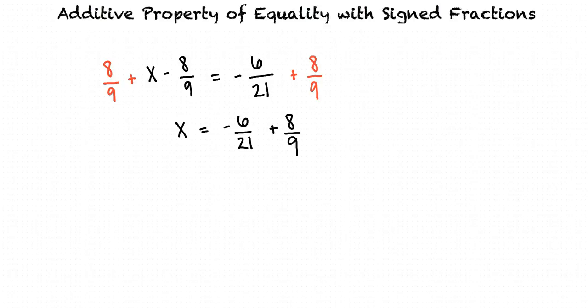Now we must evaluate the right side of the equation, which is a fraction addition problem with a negative fraction. Since the denominators 21 and 9 are not the same, we need to find a common denominator, and we can do this by finding the prime factorization of 9 and 21. I think I remember prime factorization.